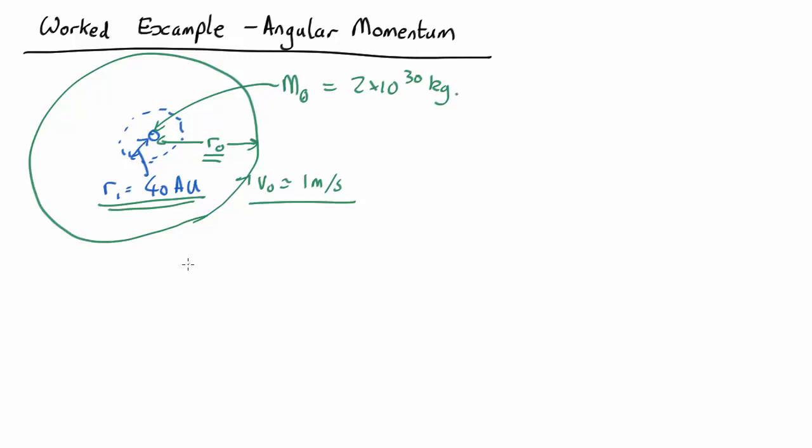So centripetal force, mass of the ice worlds, their velocity, we'll call that velocity 1 squared over r. It's a normal equation for centripetal force equals gravity, g, mass of the sun, mass of the ice worlds over r1 squared.